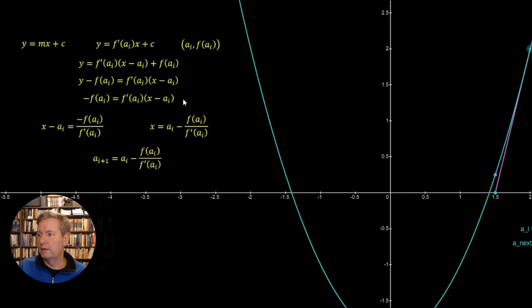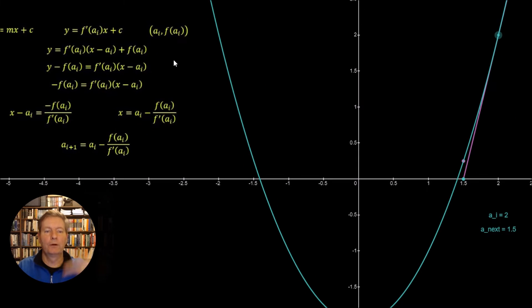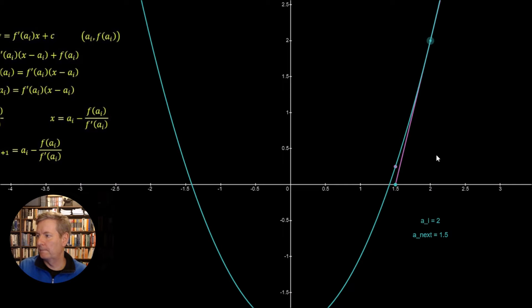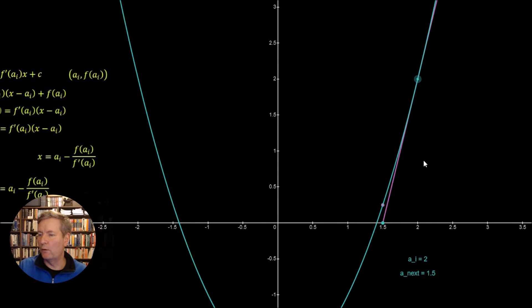So what we can do is we can take the function here which is a function of x and then we have to shift it to the right. So when we shift it to the right we generate x minus ai. So x minus ai will shift it to the right by a value of ai. So that's going to make sure it's in the correct x position. Now in order to get the correct y position we simply have to add up or move up the axis by the factor of f of ai which is just this height here. So that's going to give us the equation of this line.